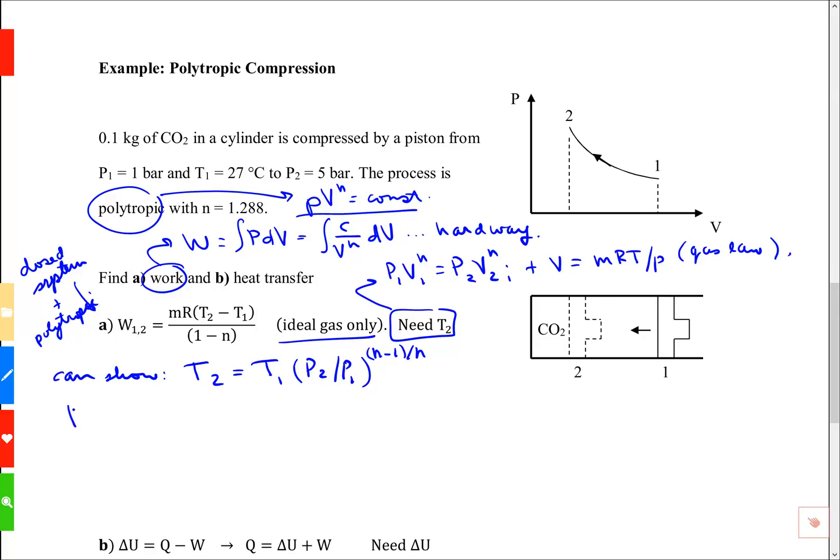We're going to use this. So T2 is going to be 27°C, and I've got to add 273 to make it absolute. Anytime you use the gas law, or a relationship built on the gas law, you've got to use absolute temperature.